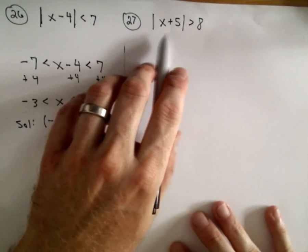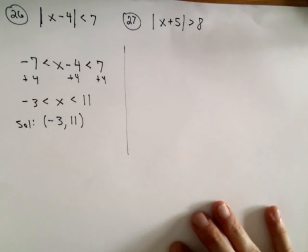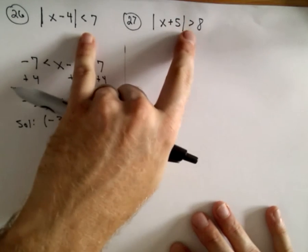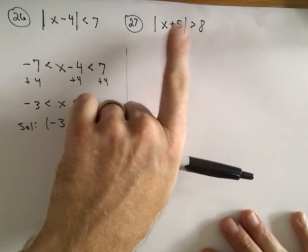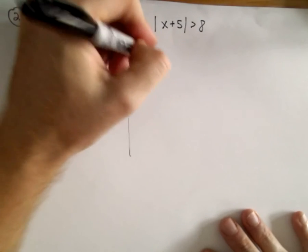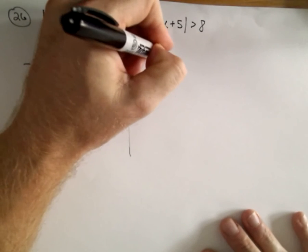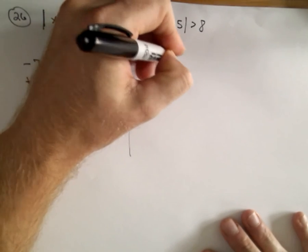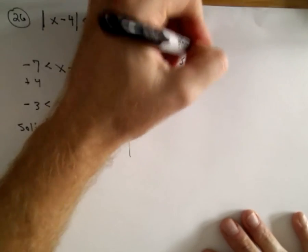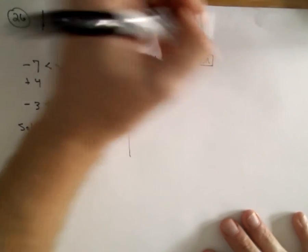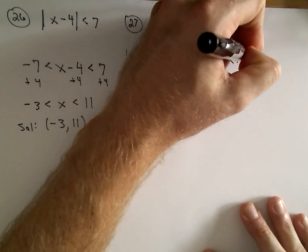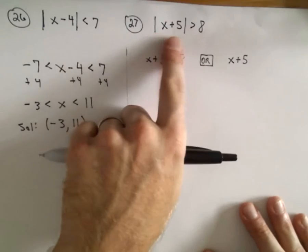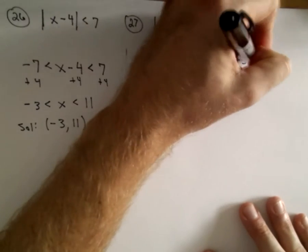Here we've got the absolute value of x plus 5 greater than 8. In this case, notice the inequality's been flipped. Well, what numbers can we take the absolute value of so that they're greater than 8? If we can make the stuff inside the absolute value greater than 8, that's going to work. Or, the other solutions will be if we can make the number inside the absolute value bars less than negative 8.